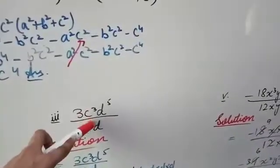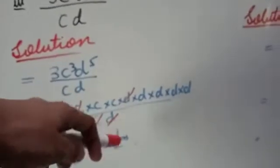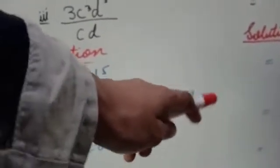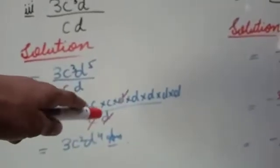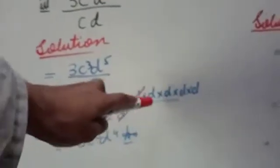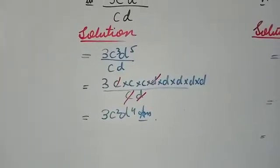Here, c appears three times — its power is 3 — and d appears five times — its power is 5. When you expand and cancel, c cancels one time from the denominator, leaving c². Similarly, d cancels one time, leaving d⁴. So your answer is 3c²d⁴.